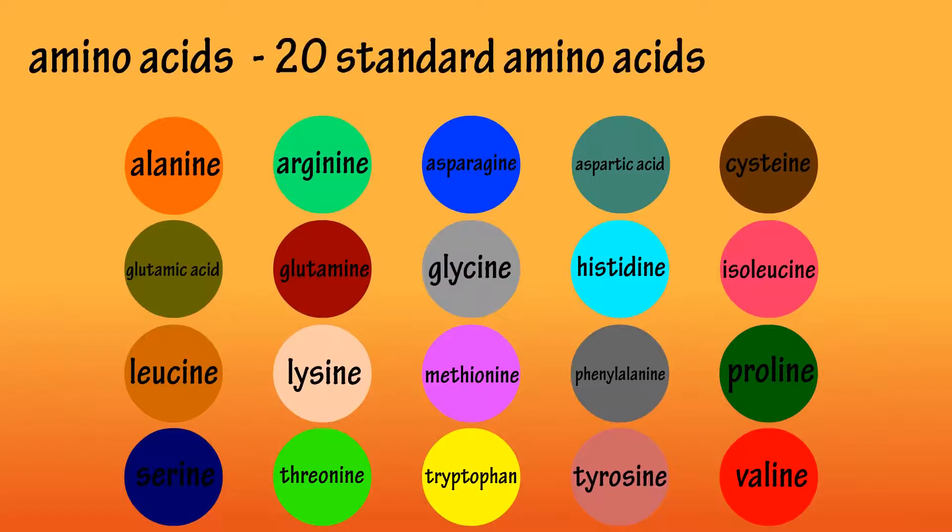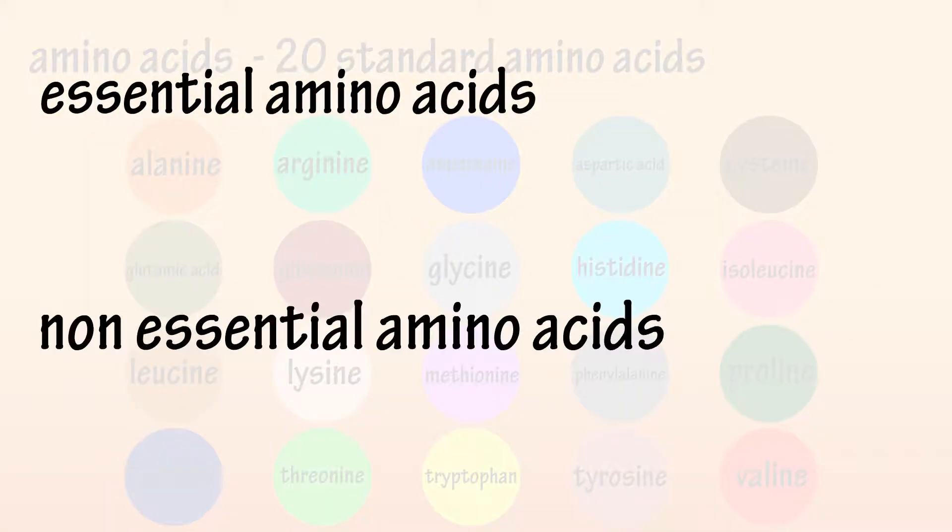There are 20 different standard amino acids that your body requires for healthy function. These amino acids are often classified as essential and non-essential amino acids.